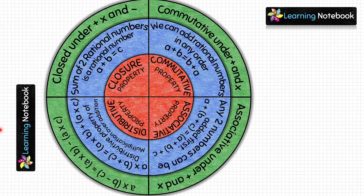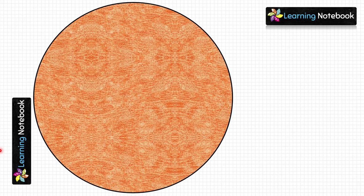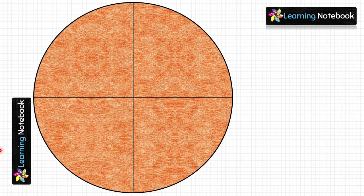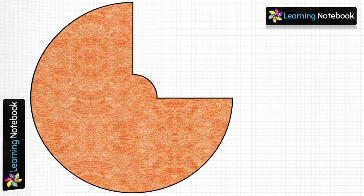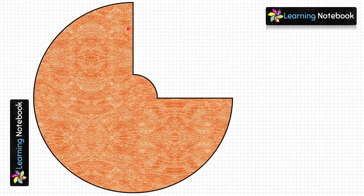Now all three circles are complete. Take the orange circle, fold it vertically as well as horizontally, then using scissors cut out one of its quadrants — make sure you do not cut all the way to the end, as shown in the picture.